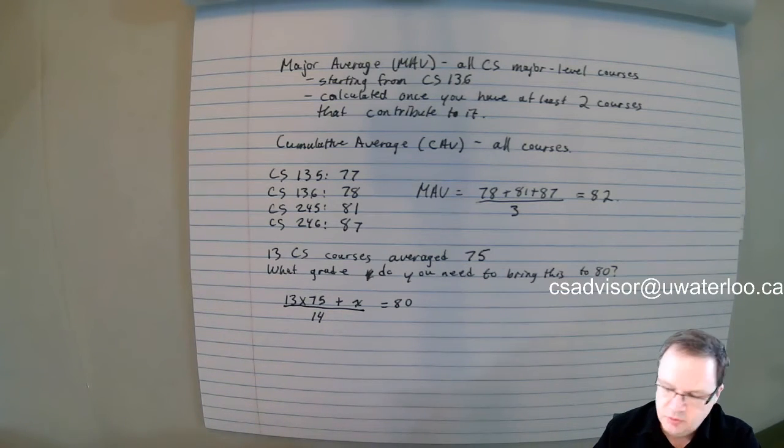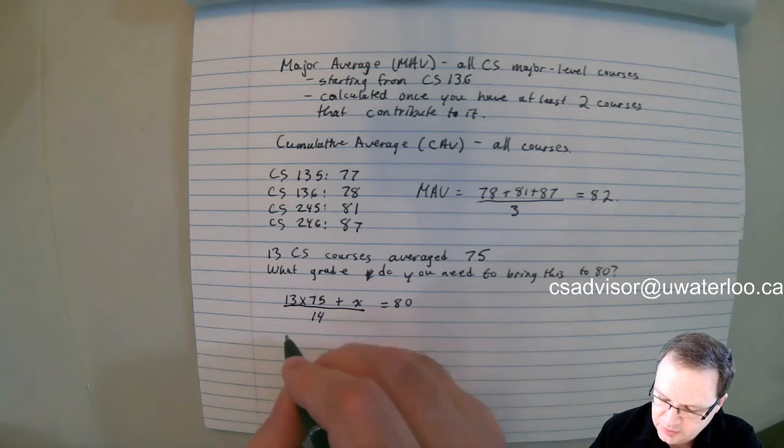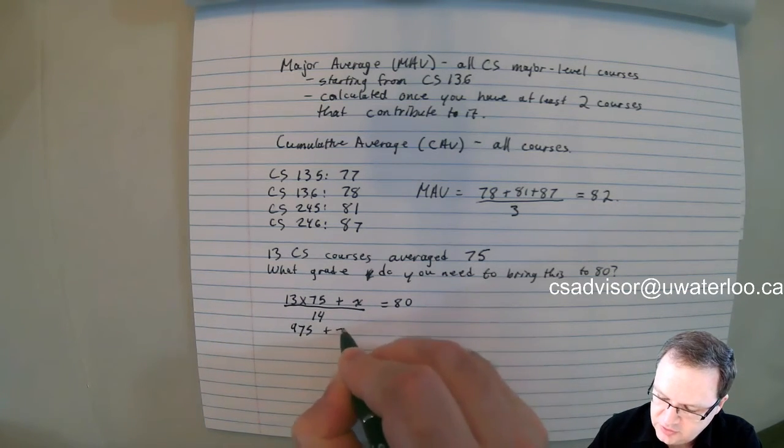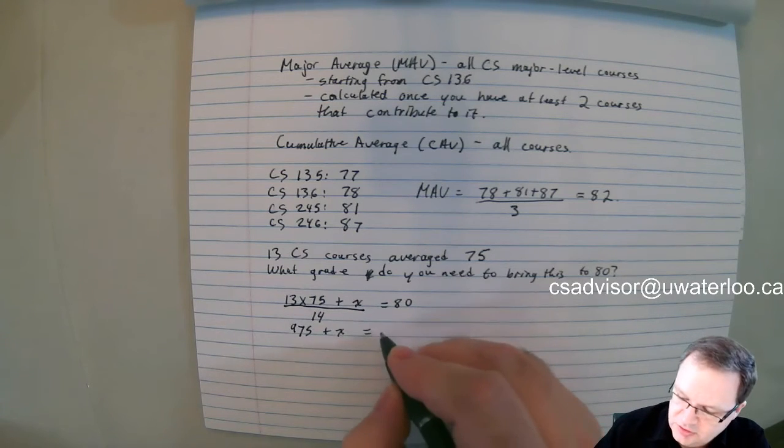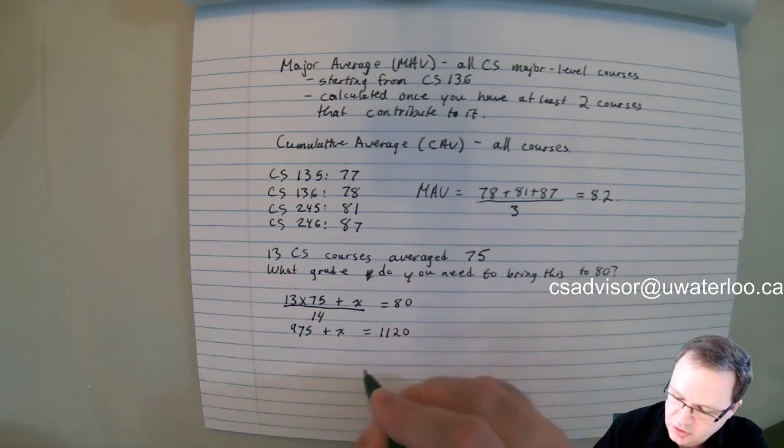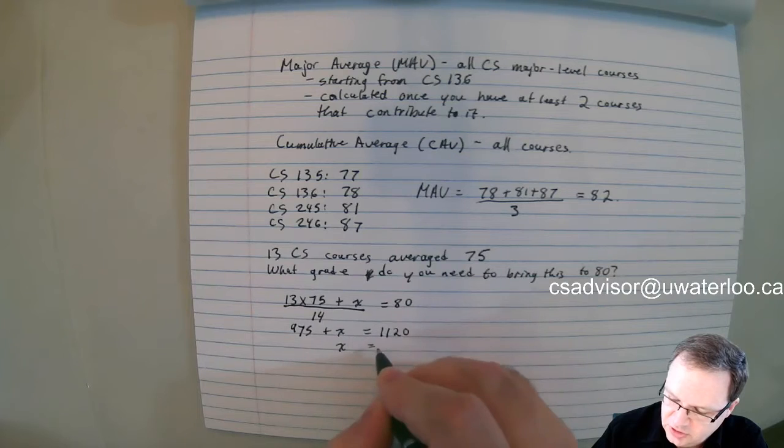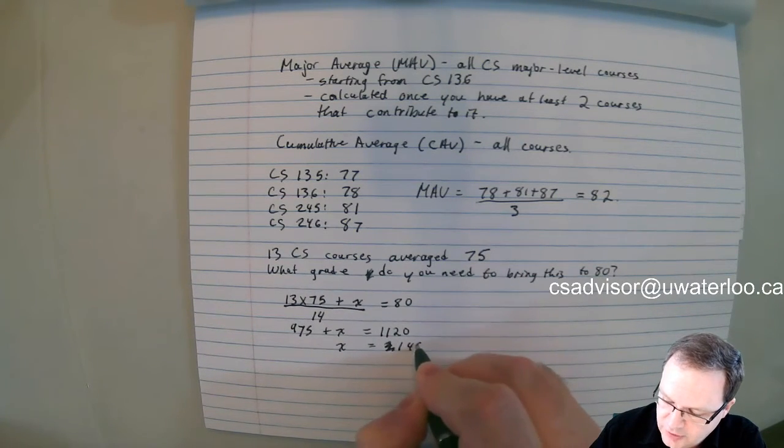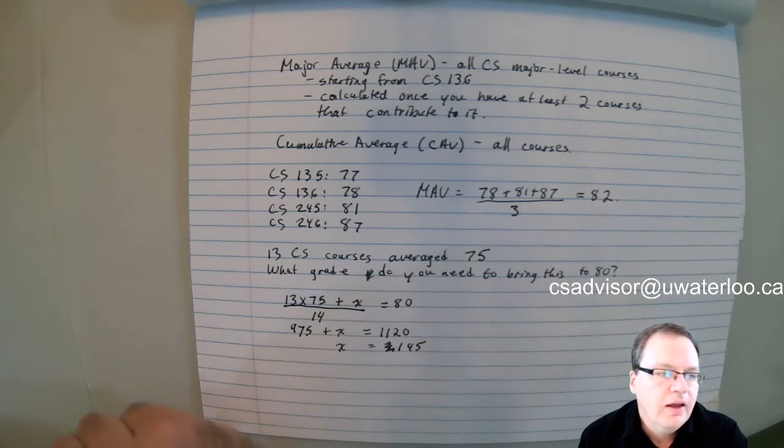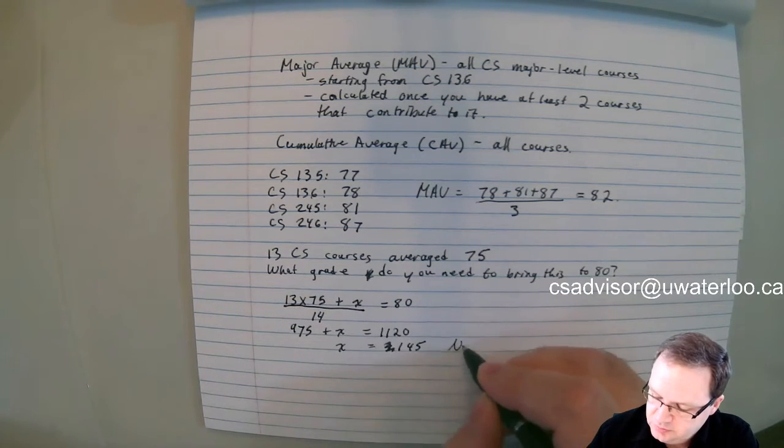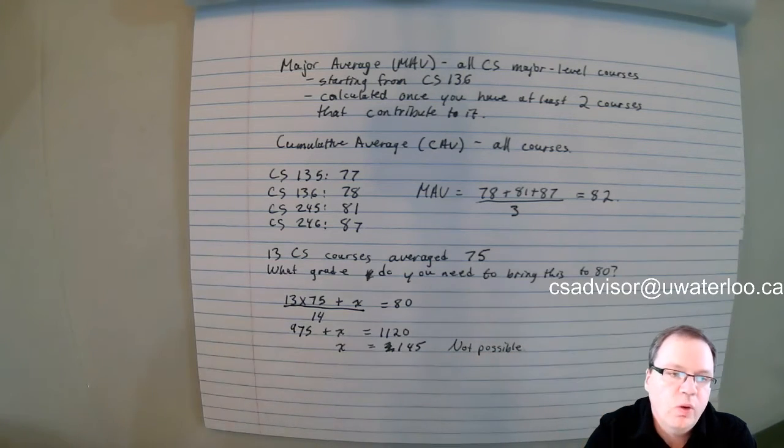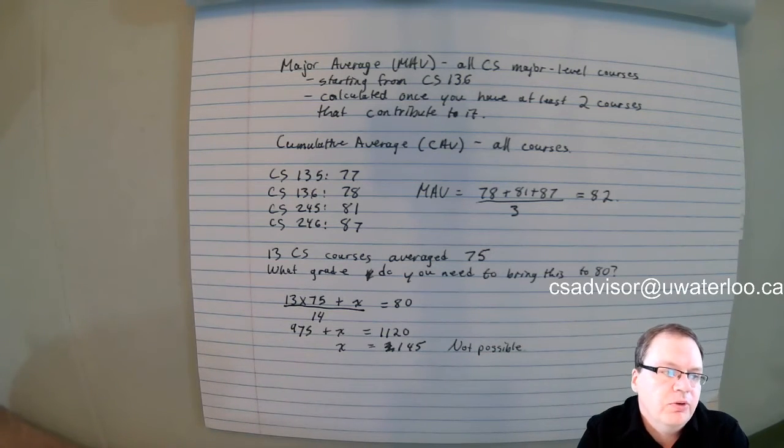Let's assume that you're going to take one more course. So, I could list out 13 CS grades that average 75, but rather than do that, let's just imagine that these 13 courses averaging 75, that's mathematically equivalent to getting 75% 13 times. And let's say you take one more course with a grade of X, then you've taken 14 CS courses in total, you'd like that to average out to 80. Well now we just go ahead and do the math. So 13 times 75 is 975, plus X, and 80 times 14 is 1120, which means that X is equal 145. And that's not possible. So with one more CS course you're not going to be able to bring your average to 80.